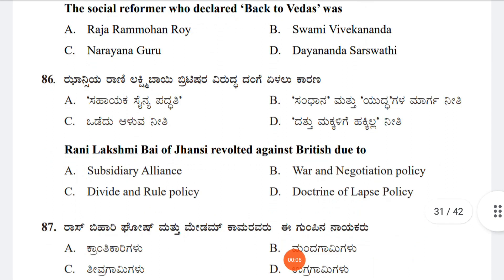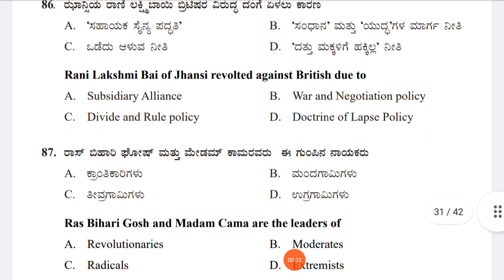Question 86: Rani Lakshmi Bhai of Jhansi revolted against the British due to which reason? Option A: Subsidiary Alliance, Option B: War and Negotiation Policy, Option C: Divide and Rule Policy, Option D: Doctrine of Lapse Policy. The answer is Option D, Doctrine of Lapse Policy.